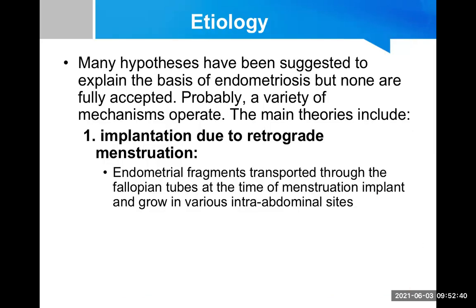Now let's discuss the etiopathogenesis of endometriosis. Many hypotheses have been suggested to explain the basis of endometriosis, but none are fully accepted. Probably a variety of mechanisms operate to explain why endometrial tissue is present outside the endometrial cavity.